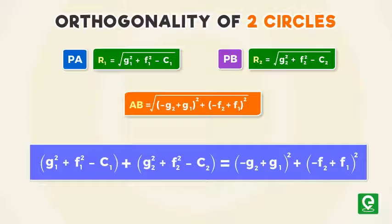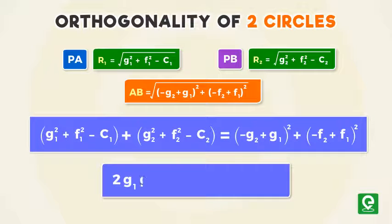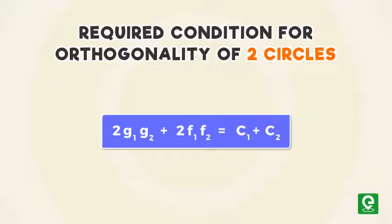After simplification we get 2g₁g₂ + 2f₁f₂ = c₁ + c₂. This equation is the required condition for two intersecting circles to be orthogonal.